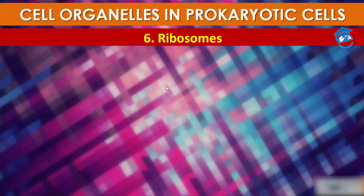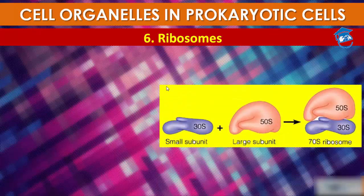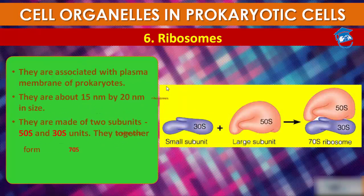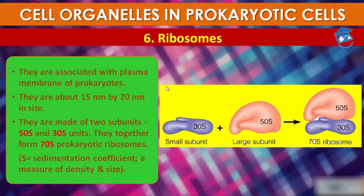Now comes ribosomes. In prokaryotes, ribosomes are associated with the plasma membrane of the cell. They are about 15nm by 20nm in size and are made up of two subunits: 30S and 50S, where S represents the Svedberg unit. When they combine, they form a 70S unit — not 80S. It is a 70S prokaryotic ribosome.